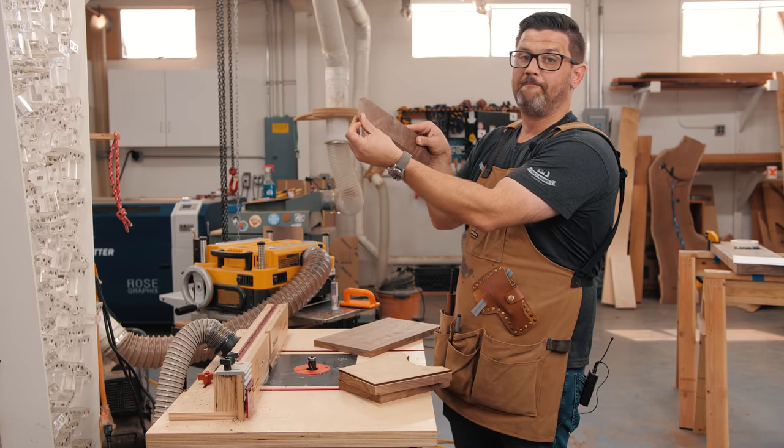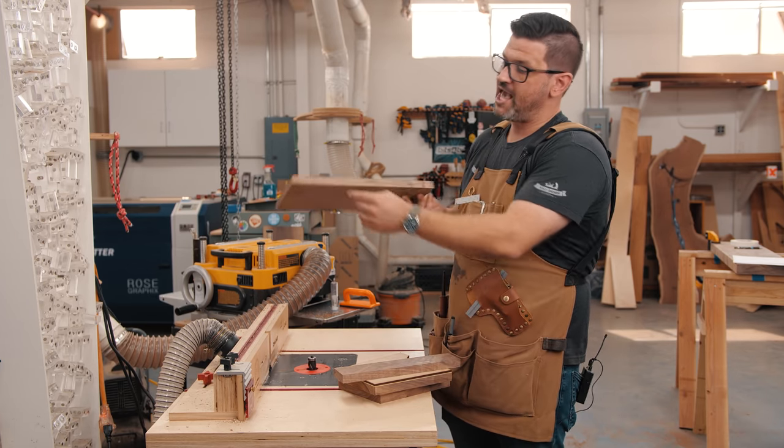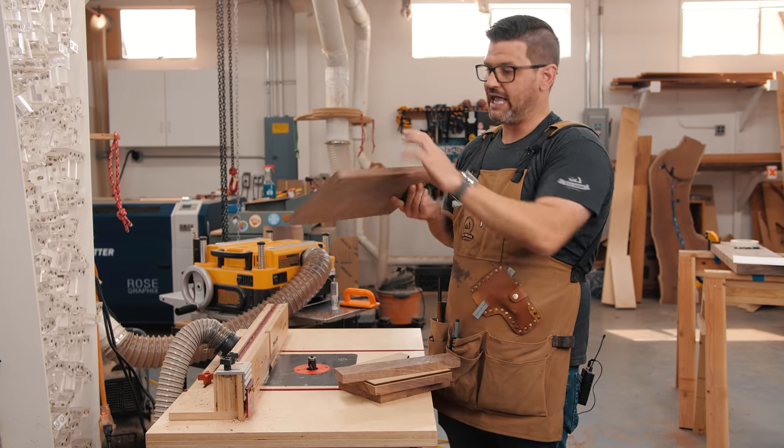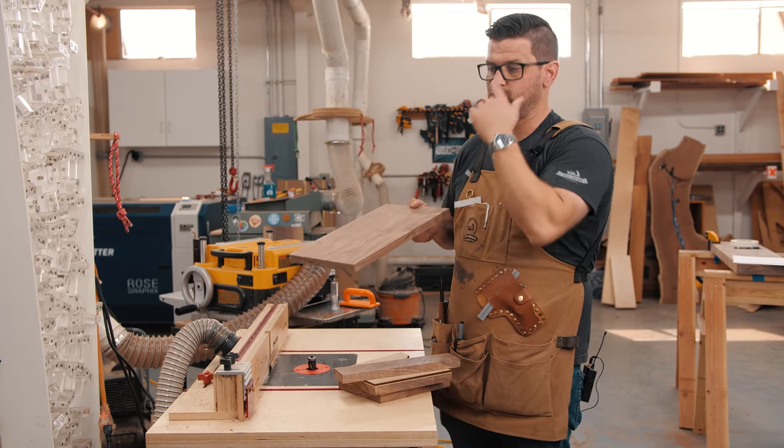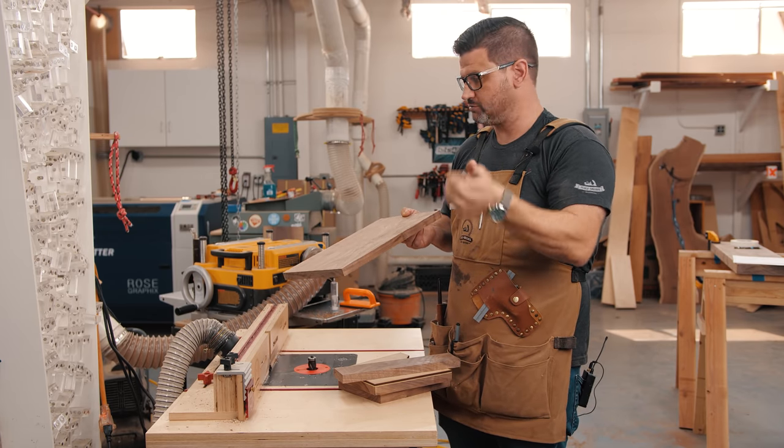Then on the stretcher, we're only going to do the bottom portion, so the part that's facing the ground, and then we're going to put a heavy chamfer on the bottom edge of the entire top. That's going to lighten the thickness of this while retaining strength, and it'll visually make it look a lot thinner, which is muy bueno.